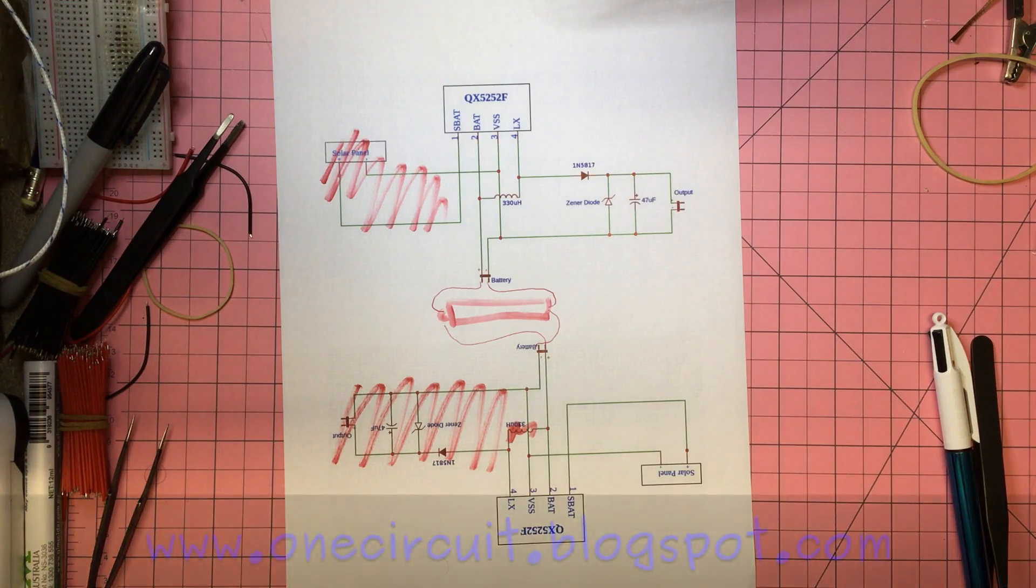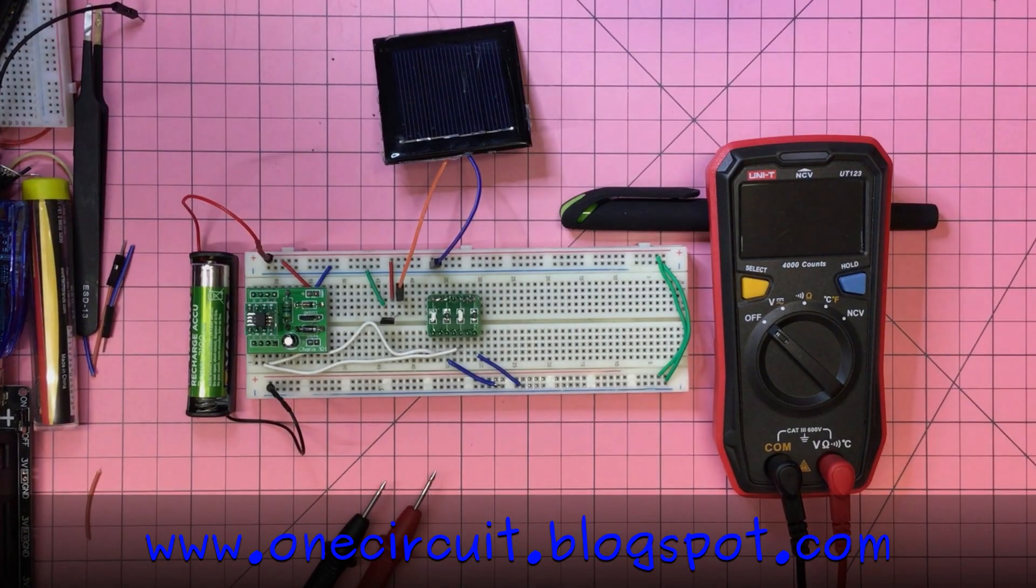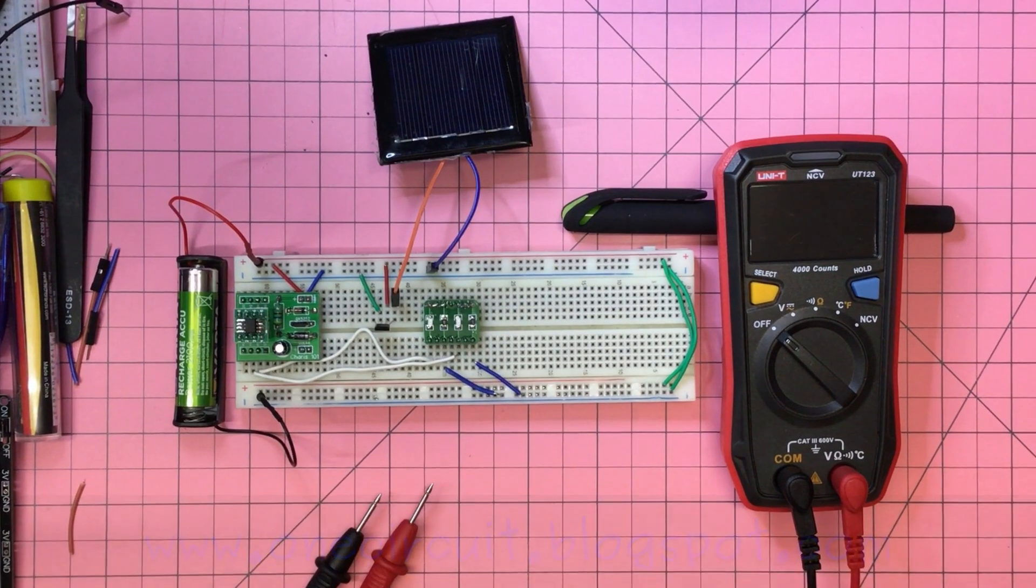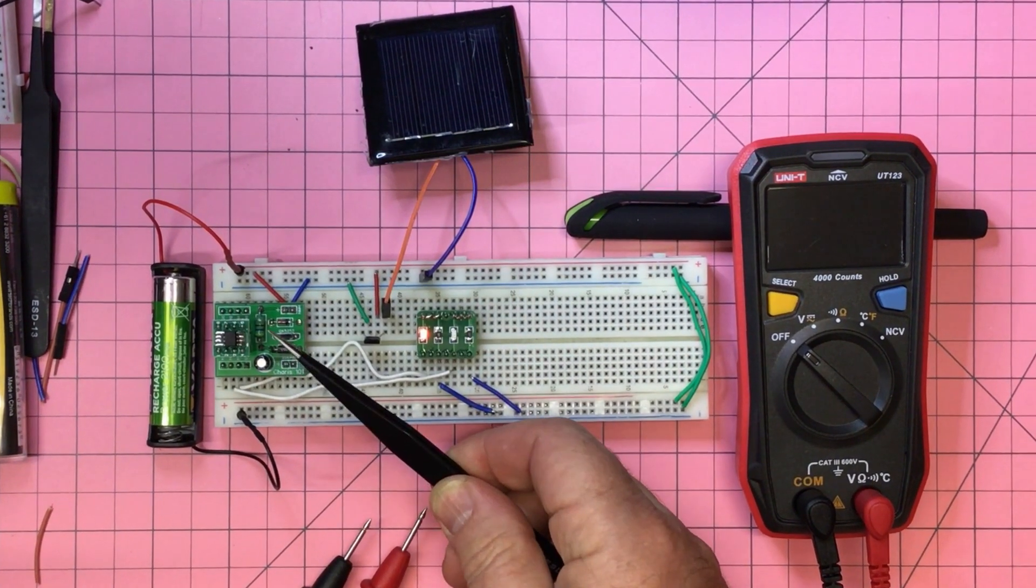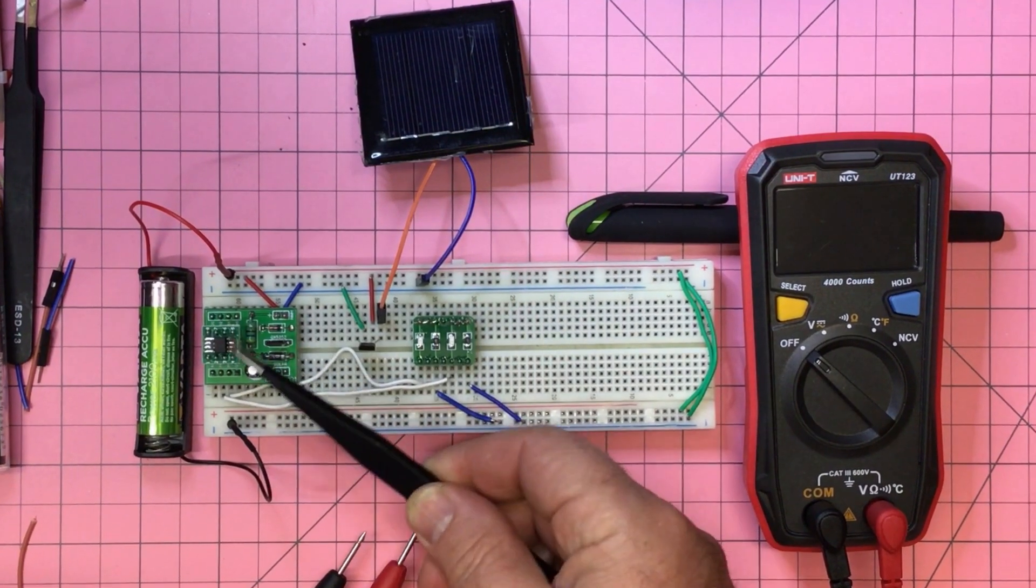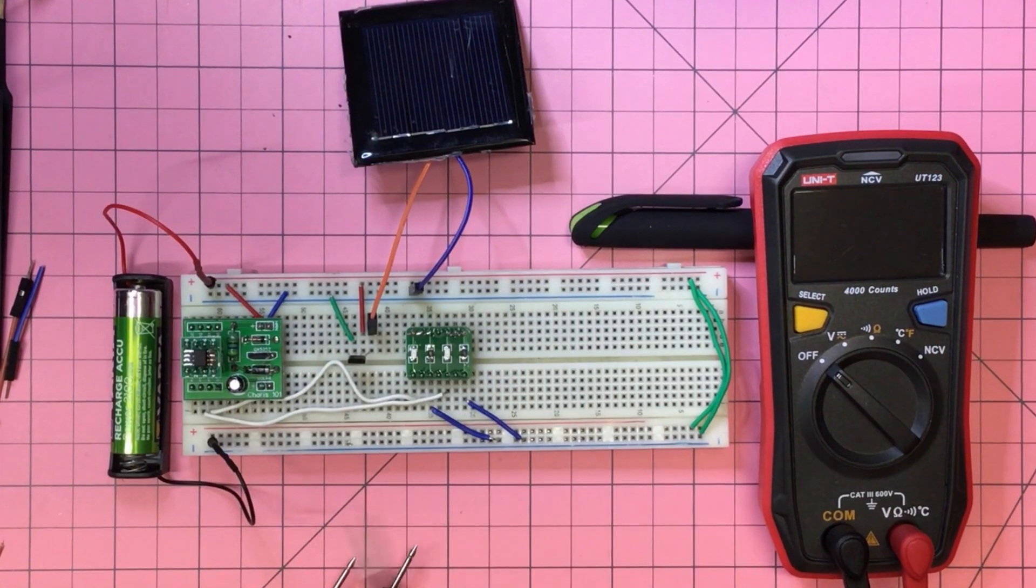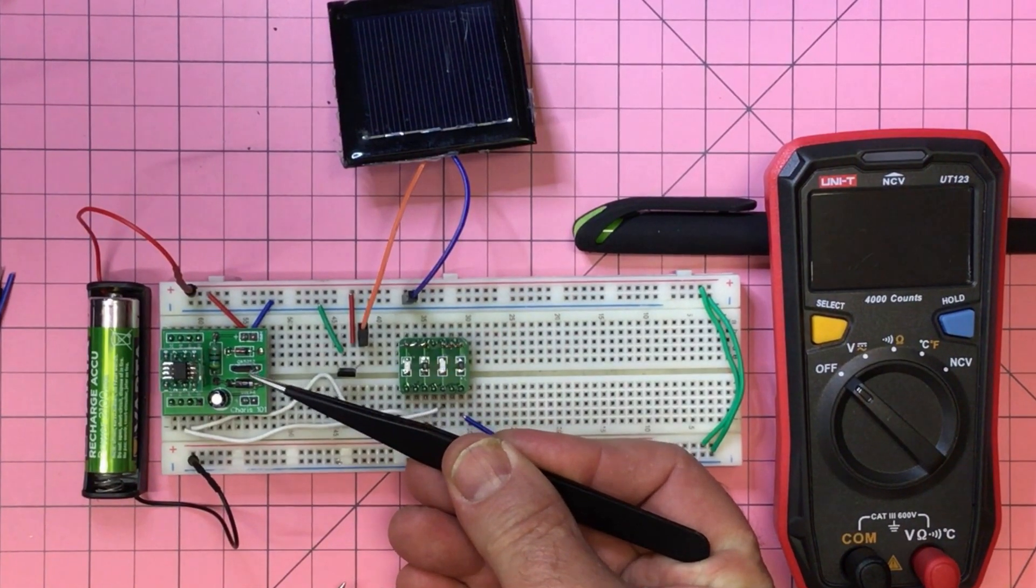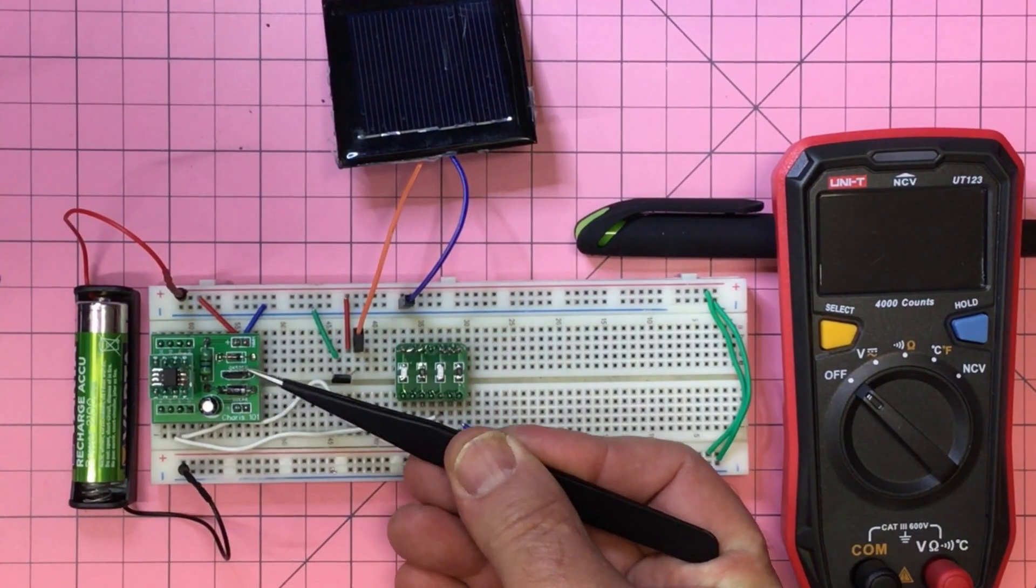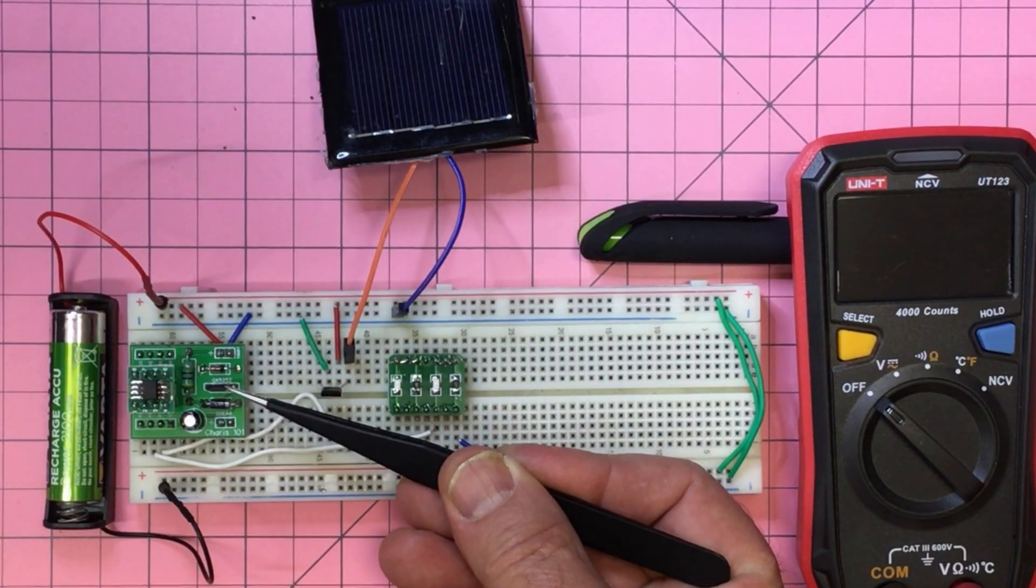Well let's take a look at this little Frankenstein. We'll start with the known quantity, so this is the stable joule thief circuit that we've seen on other blogs and other videos. At its heart it's got the QX5252, which is typically found in your solar garden lights.